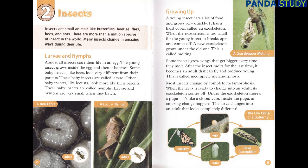Larvae and nymphs. Almost all insects start their life in an egg. The young insect grows inside the egg and then it hatches. Some baby insects, like bees, look very different from their parents. These baby insects are called larvae. Other baby insects, like locusts, look more like their parents. These baby insects are called nymphs. Larvae and nymphs are very small when they hatch.